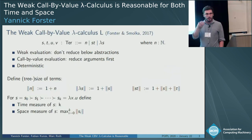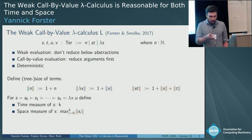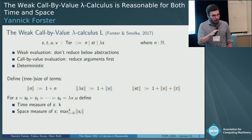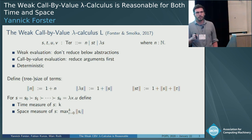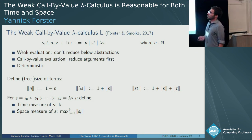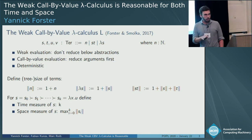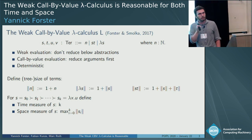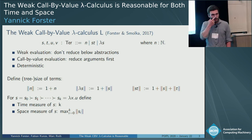I should clarify what I mean by the weak call-by-value lambda calculus. We're looking at the untyped lambda calculus with variables, applications, and lambdas. In the technical details we use de Bruijn encodings of variables. Weak means don't reduce below abstractions—essentially like the original presentation by Plotkin. Call-by-value means you reduce your argument fully to a value before plugging it in, and the only values are lambdas.